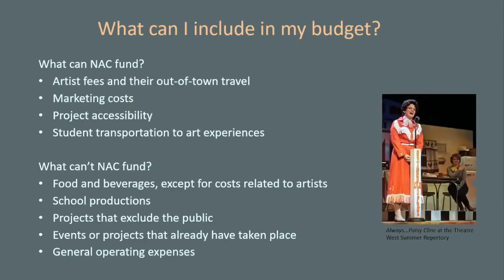Before we get to the nuts and bolts of income and expenses, it's important to point out some of the things that can be funded by us and some that can't. I'll also talk about a few caveats to those different ineligible expense categories. The top section covers what we can fund.